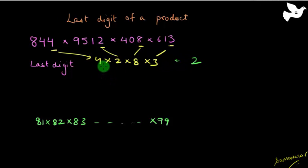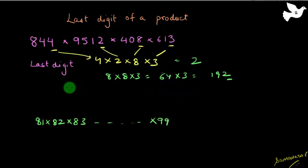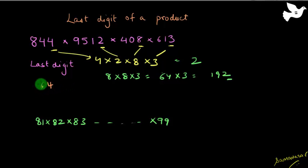Let me redo it so you understand. 4 x 2 is 8, 8 x 8 is 64, 64 x 3 is 192 — so the last digit is 2. In an exam, you need to do it quickly. All you need to do is keep leaving out the tens digit. 4 x 2 is 8, 8 x 8 is 64 — leave out the 6, just take the 4. 4 x 3 is 12 — leave out the 1, answer is 2. This is how you find the last digit of a product.